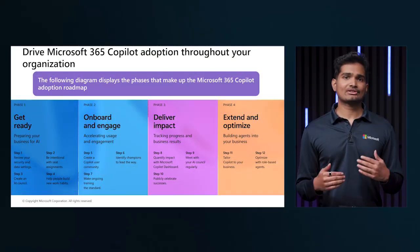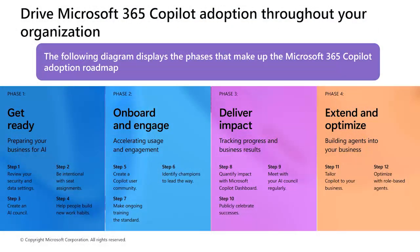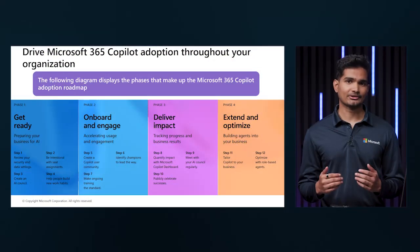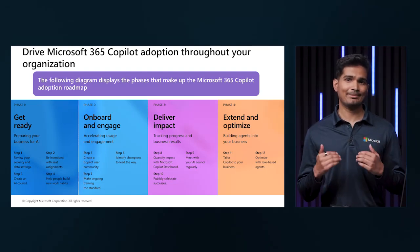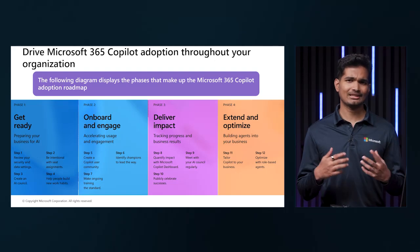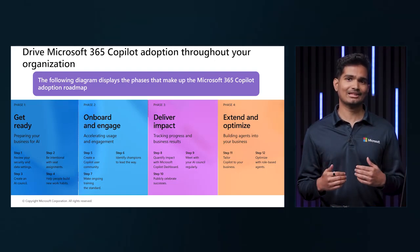How do you increase the adoption of M365 Copilot throughout your organization? It happens in stages. In phase one, start by reviewing your security and data settings first and be intentional with who gets access to Copilot in the early stages. Help the early adopters build new work habits with Copilot. In phase two, make it easy for users to learn from others — start a Copilot user community and incentivize those that best make use of tools via awards or titles, some kind of gamification, and keep training folks as a standard practice.